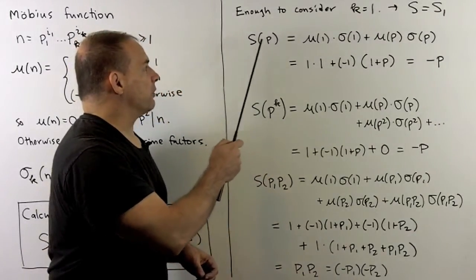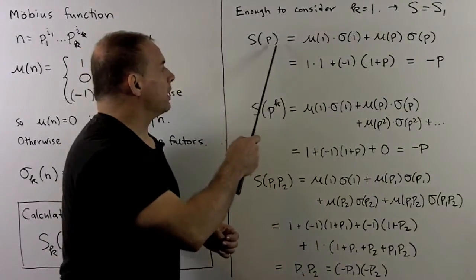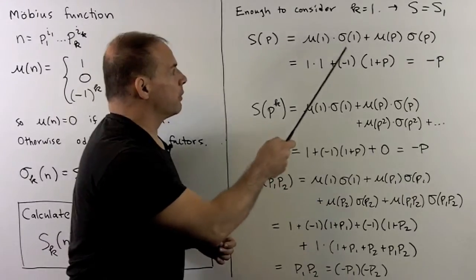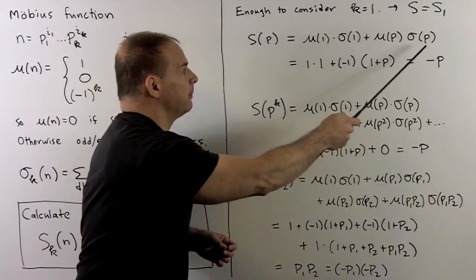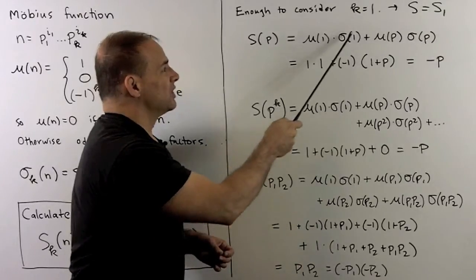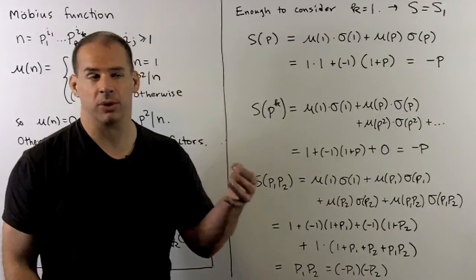First, I'll consider S of p, where p is a prime. The only divisors here are going to be 1 and p. So I have mu 1 sigma 1, mu p sigma p. Mu 1 is equal to 1 by definition. Sigma 1 is equal to 1. There's only one divisor there, which is 1, so the sum is 1.